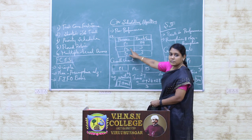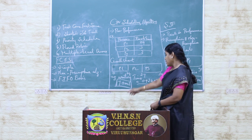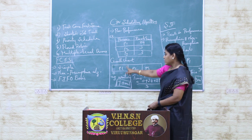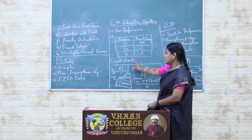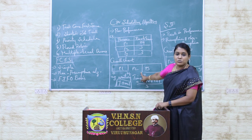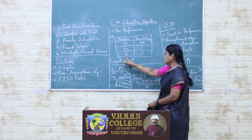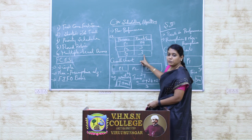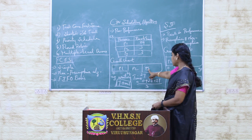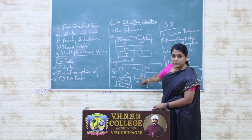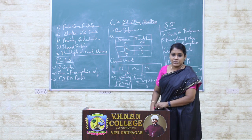Next is P2. From the 24th millisecond, P2 occupies the CPU. Its burst time is 3 milliseconds, so it finishes execution at 27 milliseconds. The last process is P3, which also has a CPU burst time of 3 milliseconds. It comes last and occupies the CPU at millisecond 27. So from 27 to 30 milliseconds, P3 occupies the CPU to finish its execution.